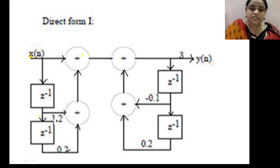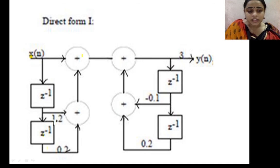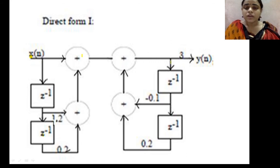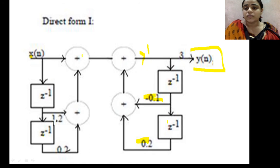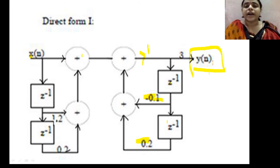For direct form 1, we require individual multipliers for X(Z) and Y(Z). The delay elements are Z⁻¹ blocks in series. For the forward path with coefficient 3 taken as common: the coefficients are 1, 1.2, and 0.2. The denominator is always represented in the feedback path, where the coefficient signs get reversed: -0.1 and 0.2. All terms are added together to give Y(n). This is the direct form 1 representation of your IIR filter.